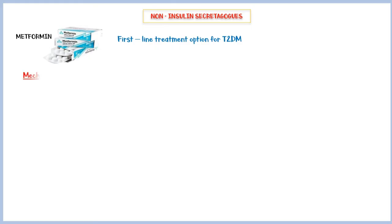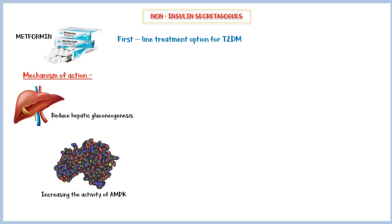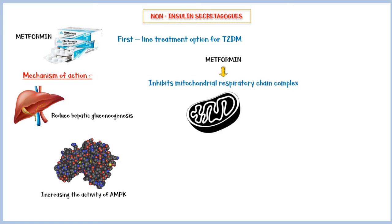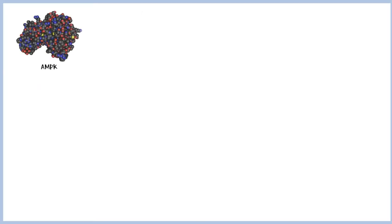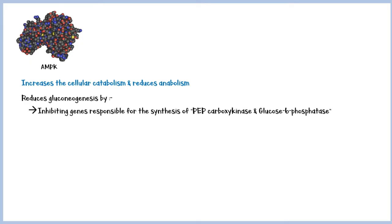Its main mechanism of action is to reduce hepatic gluconeogenesis by activation of adenosine monophosphate-activated protein kinase, or AMPK. Following administration, metformin inhibits the mitochondrial respiratory chain complex in the cells, leading to decreased ATP levels. This results in the activation of AMPK, which is a key regulator of energy homeostasis within the cells. Activation of AMPK increases the overall cellular catabolism and reduces cellular anabolism. It reduces hepatic gluconeogenesis by inhibiting genes responsible for the synthesis of PEP carboxykinase and glucose-6-phosphatase, which are key enzymes in the gluconeogenesis pathway.